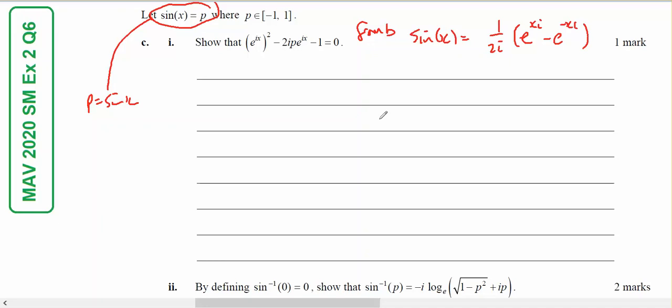This is for U12 special from MAV 2020 question 6c. I know from part B, I'm going to use previous information. This is what we found in part B, and now we're told that sine(x) equals p, so this is what p equals.